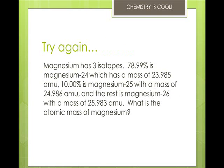So you're going to try this one. Magnesium has three isotopes. 78.99% is magnesium-24, which has a mass of 23.985. 10% is magnesium-25, with a mass of 24.986, and the rest is magnesium-26, with a mass of 25.983 AMU. What is the atomic mass of magnesium? And this is why atomic masses are not whole numbers, but are averages, and the masses are decimal numbers on the periodic table.